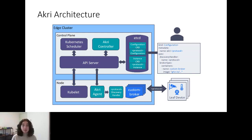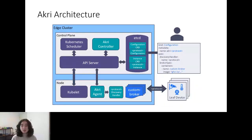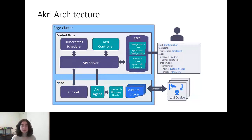The instance not only represents the device but also represents what nodes can see the device, has a list of what workloads are currently using the device, and even has connectivity information. For example, for an IP camera, it would have the IP address, MAC address, and RTSP URL — all the information a broker would need to know what device to connect to. Then the Akri controller sees the instance that's been created and deploys the broker you specified in your configuration to one of the nodes that can see that device. The broker connects to the device and takes whatever actions it was intended to do. We put 'custom broker' in the diagram because that's really what you bring to Akri — we've created the platform for discovering and automating deployment, and it is your workload that we deploy on your behalf.